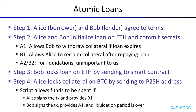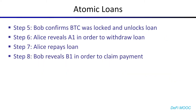The script allows the funds in the address to be moved only if one of these is true: either Alice signs the transaction and provides the B1 secret, or Bob signs the transaction and provides the A1 secret and the liquidation period is over. Both Alice and Bob need the other party's secret in order to spend the collateral. After everything is locked properly, Bob confirms it and then unlocks the loan on ETH. Alice can withdraw the loan, but only if she reveals A1, verified by comparing the hashed version of A1 to the previously committed hash.